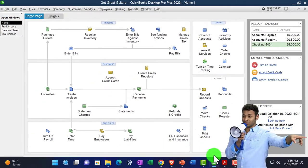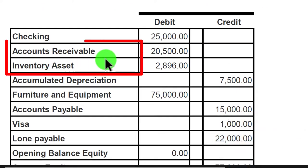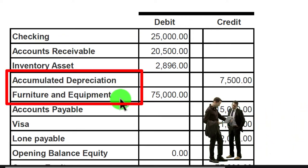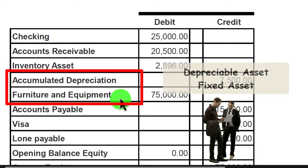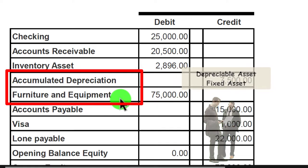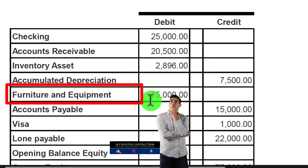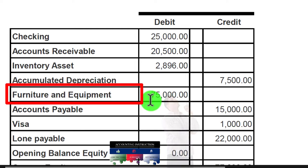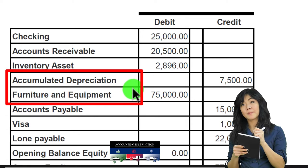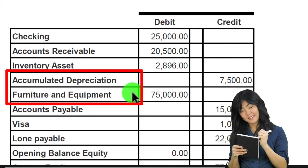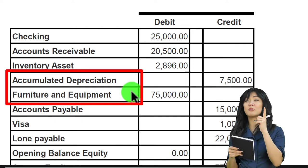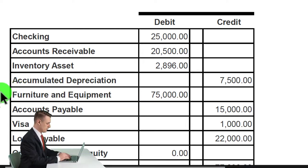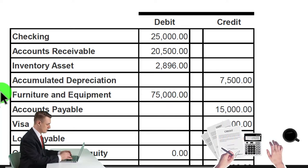Going back to the home page — we'll have to deal with outstanding checks during bank reconciliation. Receivables and inventory are already done. Now we've got two related items: furniture and equipment (also called depreciable assets or fixed assets) and accumulated depreciation. Notice the accumulated depreciation appears before furniture and equipment alphabetically in the chart of accounts because we don't have account numbers set up — 'A' comes before 'F.' That's one problem with not having account numbers.